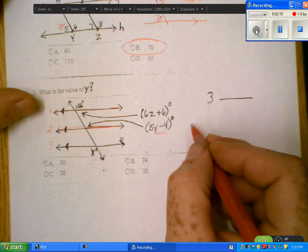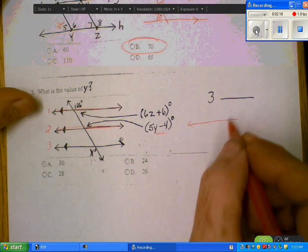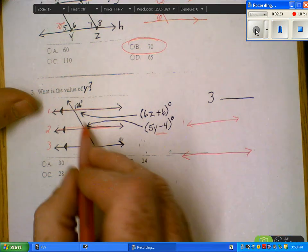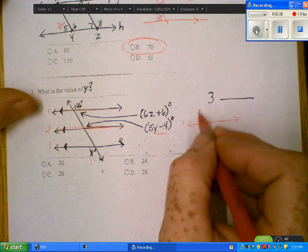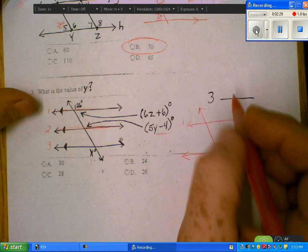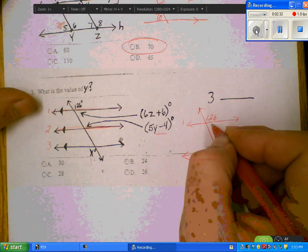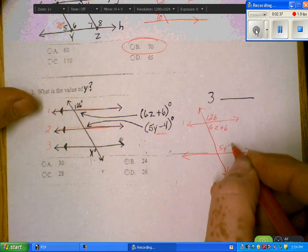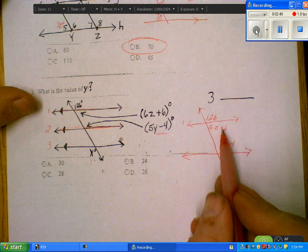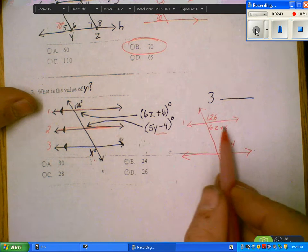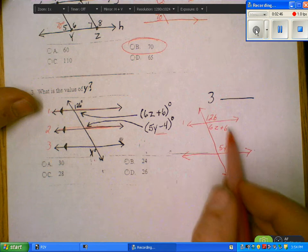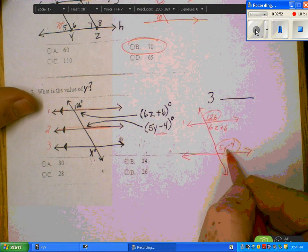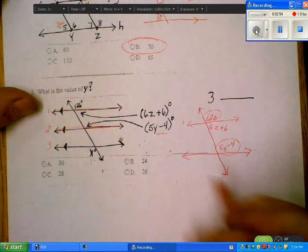So I'm going to use angle for line 1 up here. Line 1, line 3, this is our transversal. We know that this is 126, this is 6C plus 6, this is 5Y minus 4. This angle and this angle are corresponding angles, so they have to be equal to each other. So we can set up the equation.